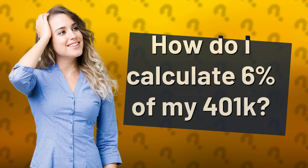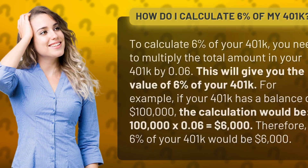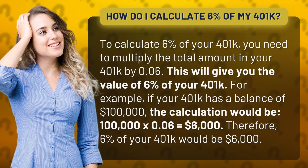How do I calculate 6% of my 401k? To calculate 6% of your 401k, you need to multiply the total amount in your 401k by 0.06. This will give you the value of 6% of your 401k.